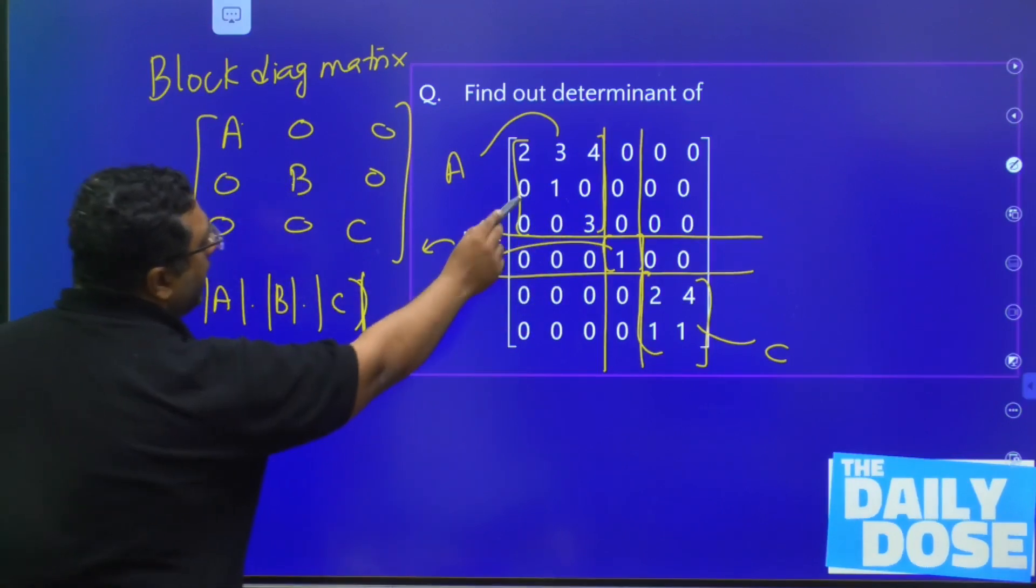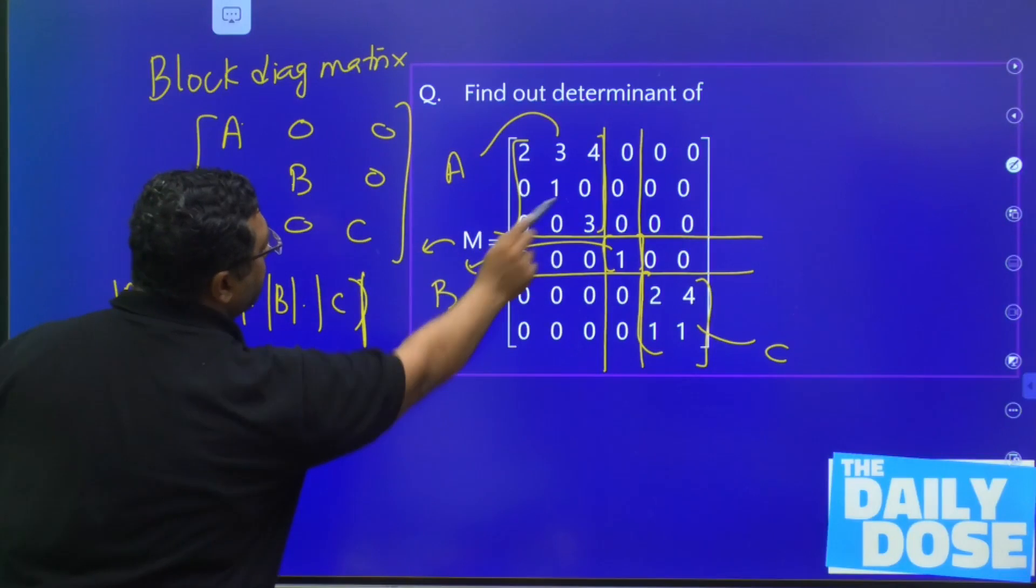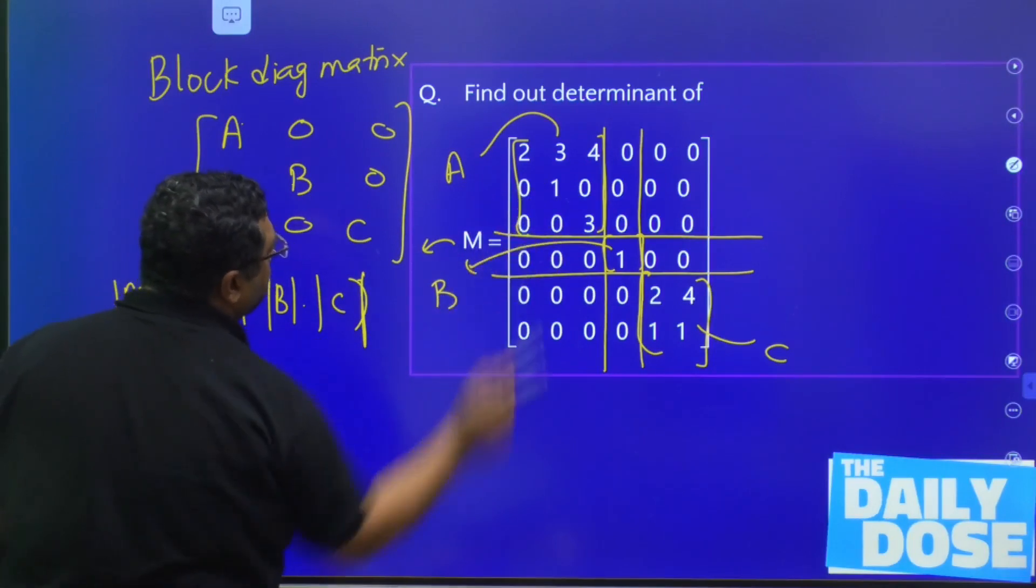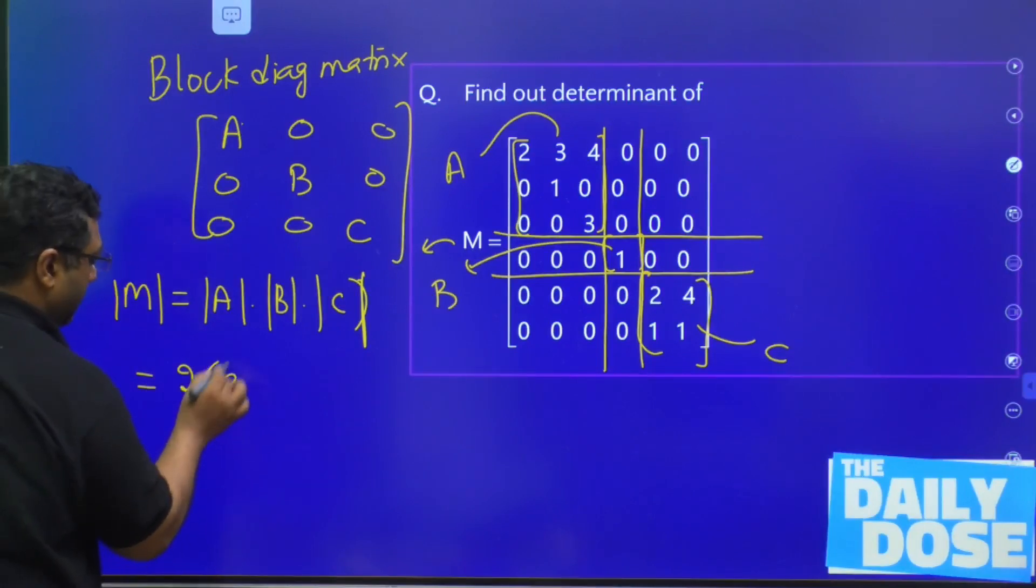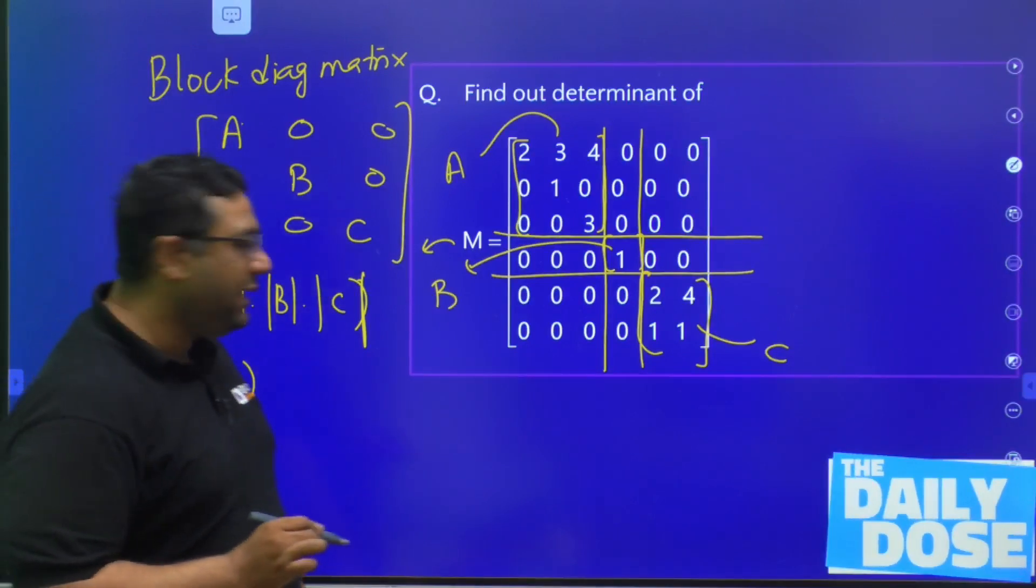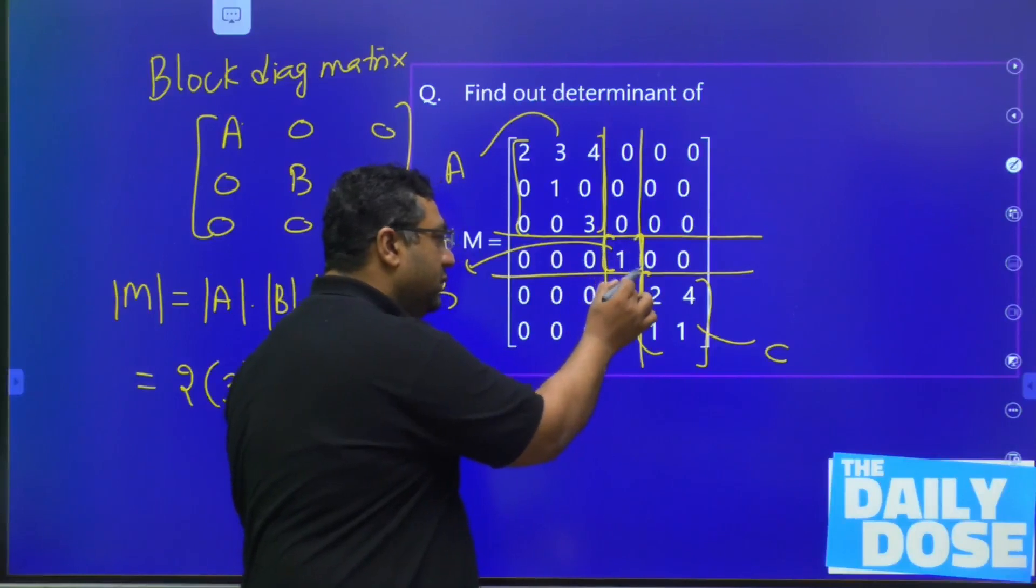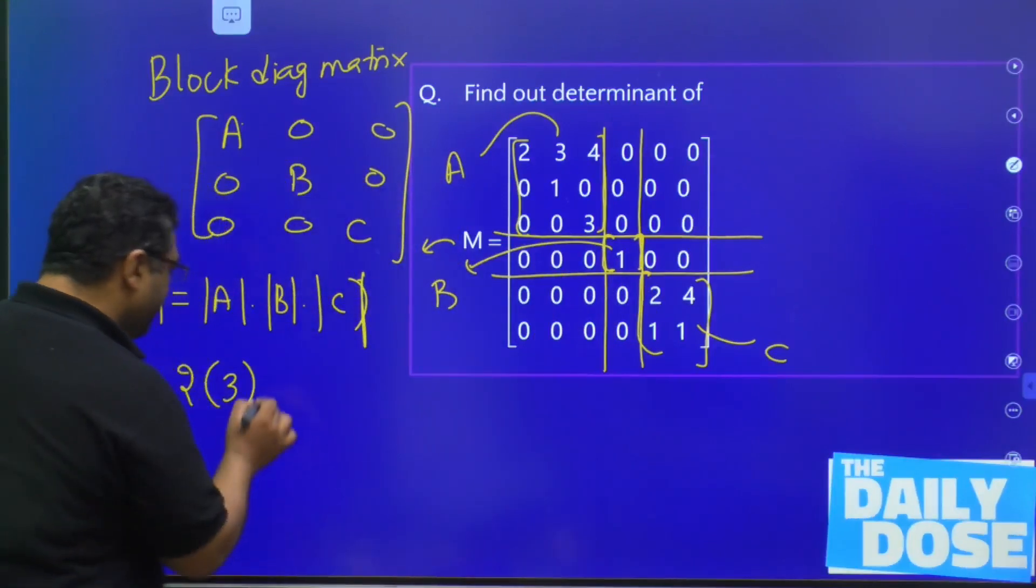Then if you are going to see this, this by this is 0, and also this and this is 0. So it is going to be 2 into 3, going to be 6. And then this is only one member, so determinant of this is going to be 1 only.